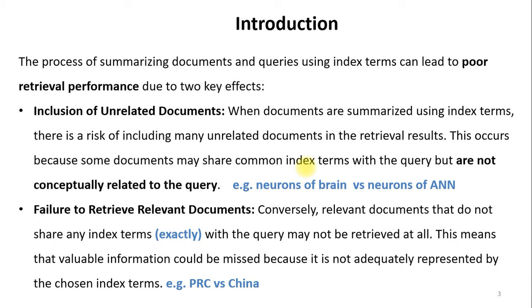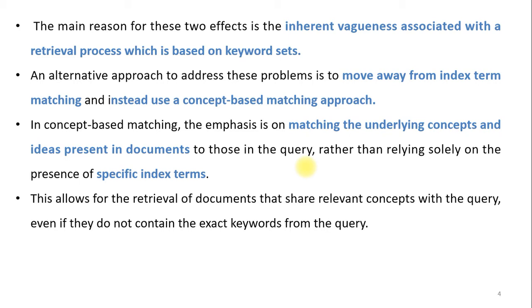The second effect is failure to retrieve relevant documents. Conversely, relevant documents that do not share any index term exactly with the query may not be retrieved at all, meaning valuable information could be missed. For example, if all documents in the repository are stored with the keyword 'China' but the user searches for 'PRC' (People's Republic of China), the relevant documents won't be found. The main reason for these two effects is the inherent vagueness of retrieval based on keyword sets.